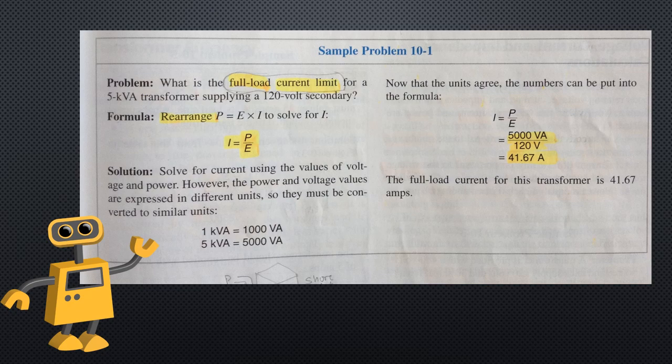Sample problem 10-1: What is the full load current limit for a 5 kVA transformer supplying a 120 volt secondary? Rearrange P = E × I to solve for current: I = P ÷ E. Convert 5 kVA to 5000 VA so units agree. Then divide 5000 VA by 120 volts to get 41.67 amps. The full load current for this transformer is 41.67 amps.